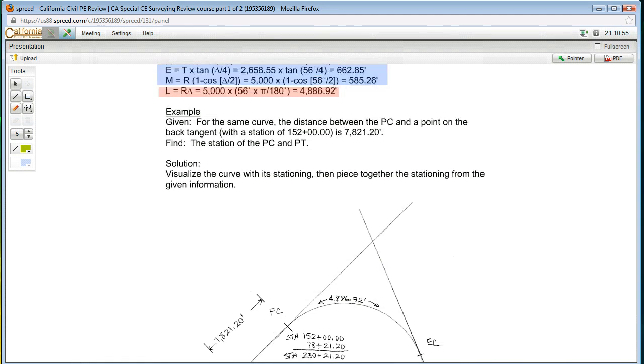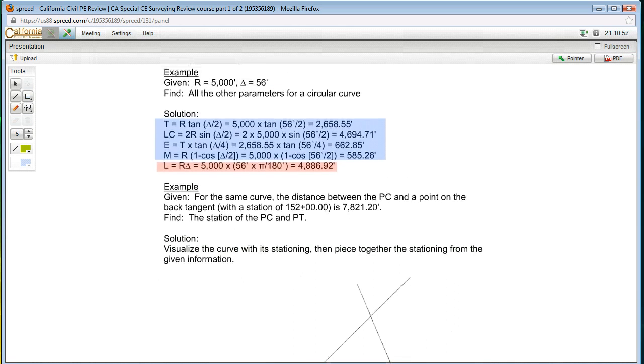So for that same curve that we were looking at, the distance between the point of curvature and a point on the back tangent with a station of 152 even is 7821.20. Find the station of the PC and PT. Now, your first thing that you say is, well, where's my sketch? You don't get one. Okay, you have to draw this thing.